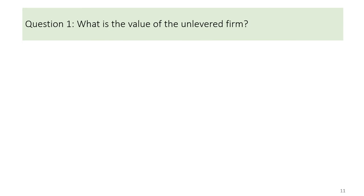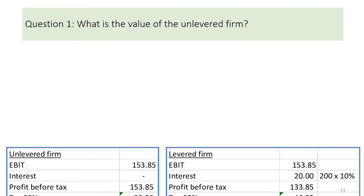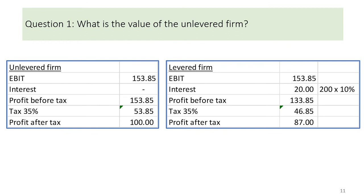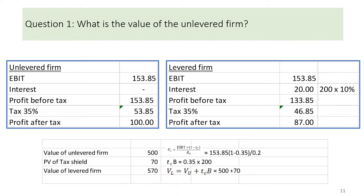Question 1: What is the value of the unlevered firm? There are many ways to approach the question — you can use the formula or reason from the financial position of the company. For a start, I would like to construct a simple income statement for the unlevered and levered positions to compare and visualize the differences. I then make use of the MM Proposition 1 formula to calculate the value of the unlevered firm and the value of the levered firm. As we learned from the theoretical explanations, the value of the levered firm is higher due to the present value of the tax shield.